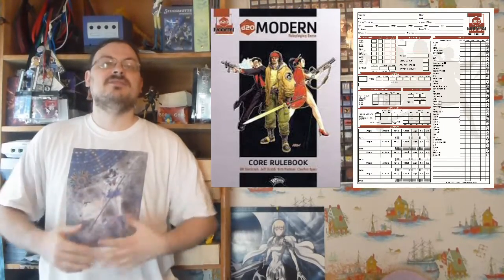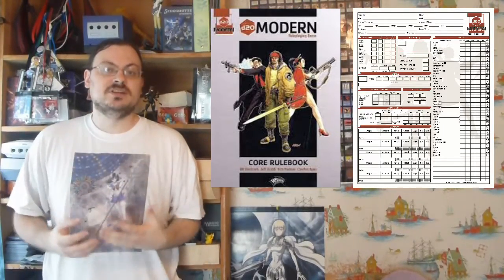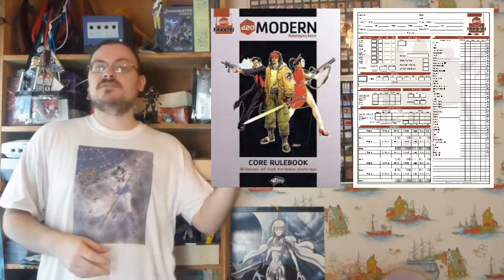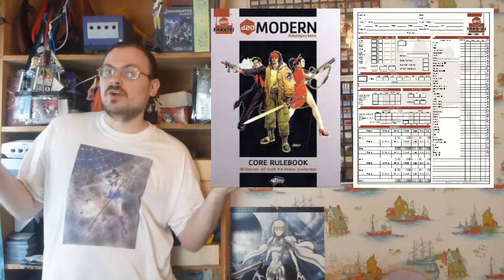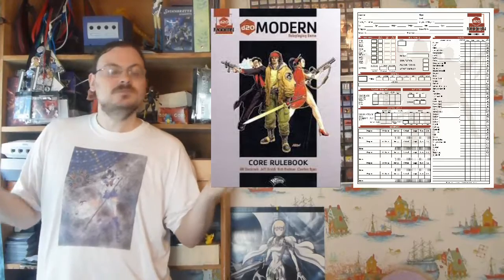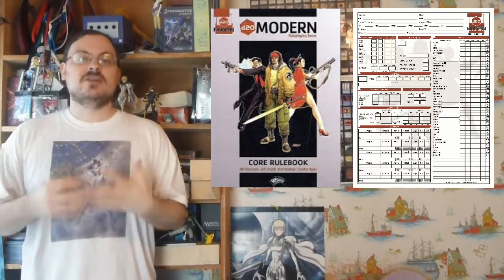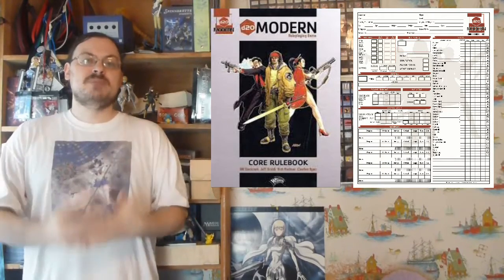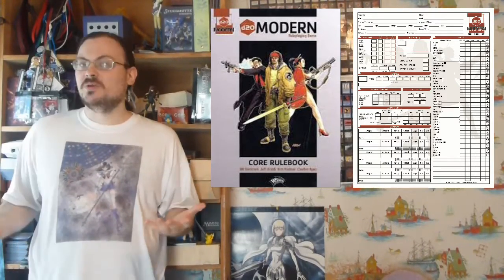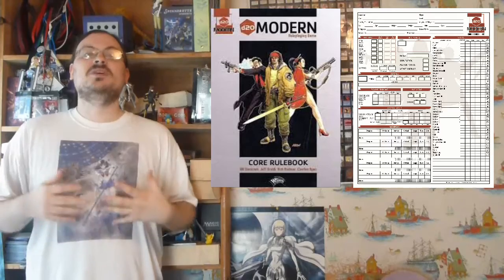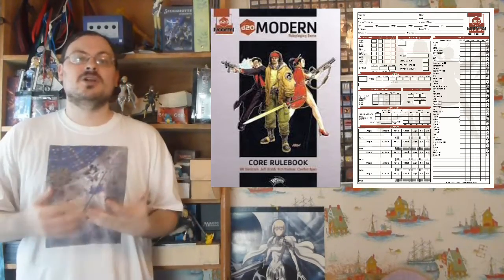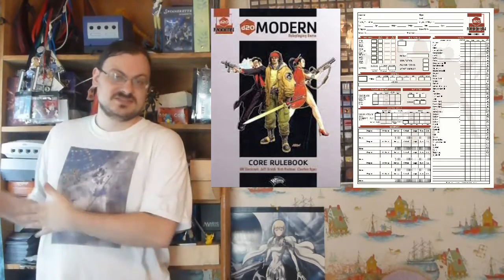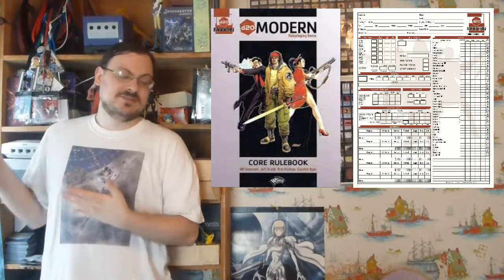Just as in Pathfinder and Dungeons & Dragons, you can multi-class — you can take levels in other heroes. So I could be a Tough hero and then take a level of Smart hero if I want to get some brains into my brawn. What you're going to be looking at later on are the advanced classes. Each of these base classes only has 10 levels, and you can level from 1 to 20, so by the time you're getting to the end you'll probably want to be thinking about an advanced class to take. I will talk about advanced classes later on, because the book talks about them later on anyway.